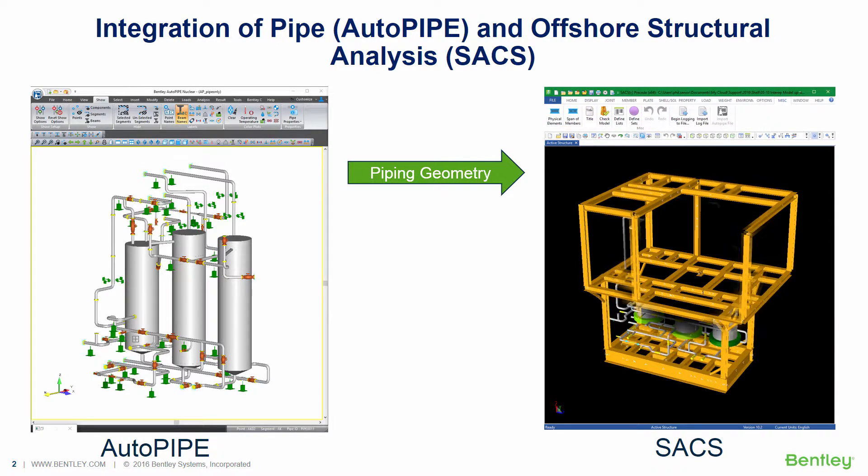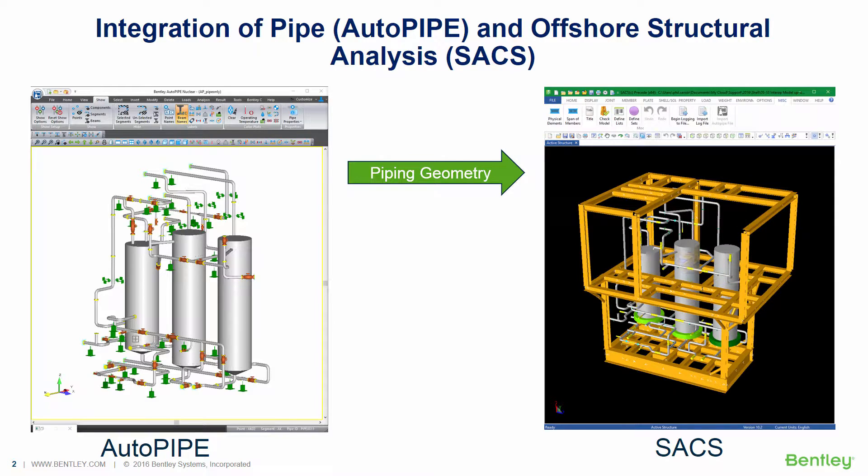We simply import the piping geometry into SACS to show the location and the type of piping supports as our first 3D visual coordination check.